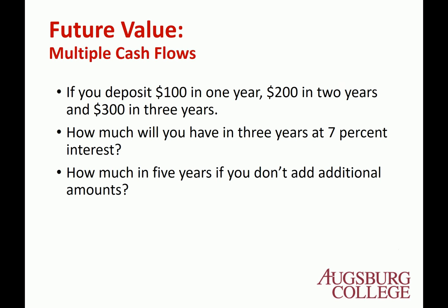Here is the example: if you deposit $100 in year 1, $200 in year 2, and $300 in year 3, and the interest rate is 7%, how much will you have in 3 years? Let's focus on this first question.